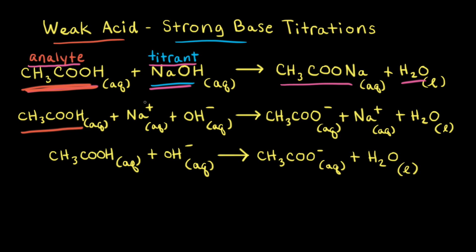Sodium hydroxide is a strong base that dissociates 100% in aqueous solution. Therefore, we show it as its ions: Na⁺ and OH⁻. Since sodium acetate is a soluble salt in aqueous solution, it consists of sodium cations and the acetate anion. We also include water in our complete ionic equation.